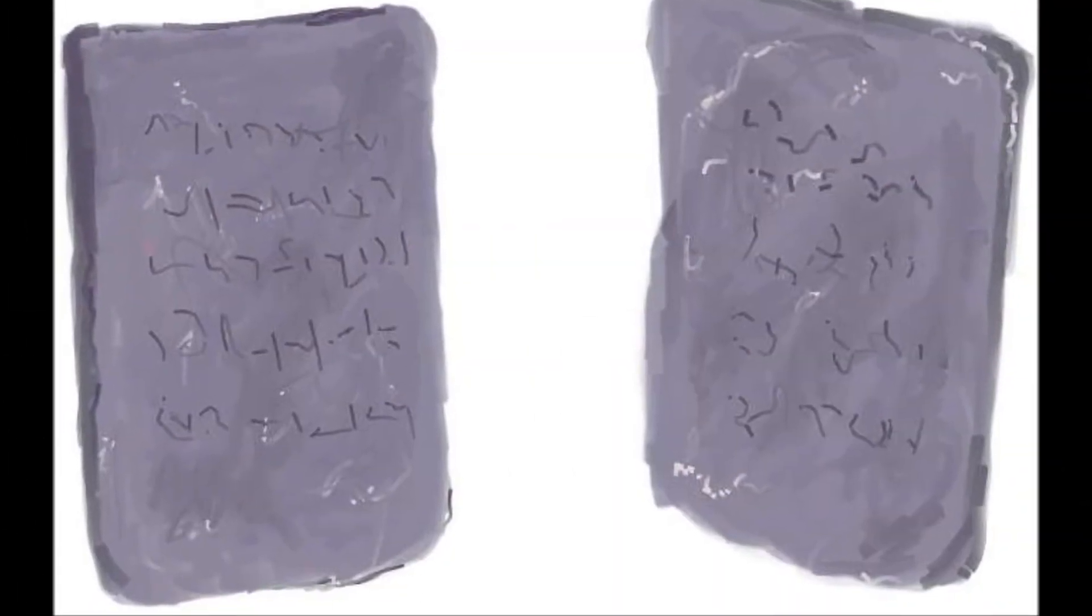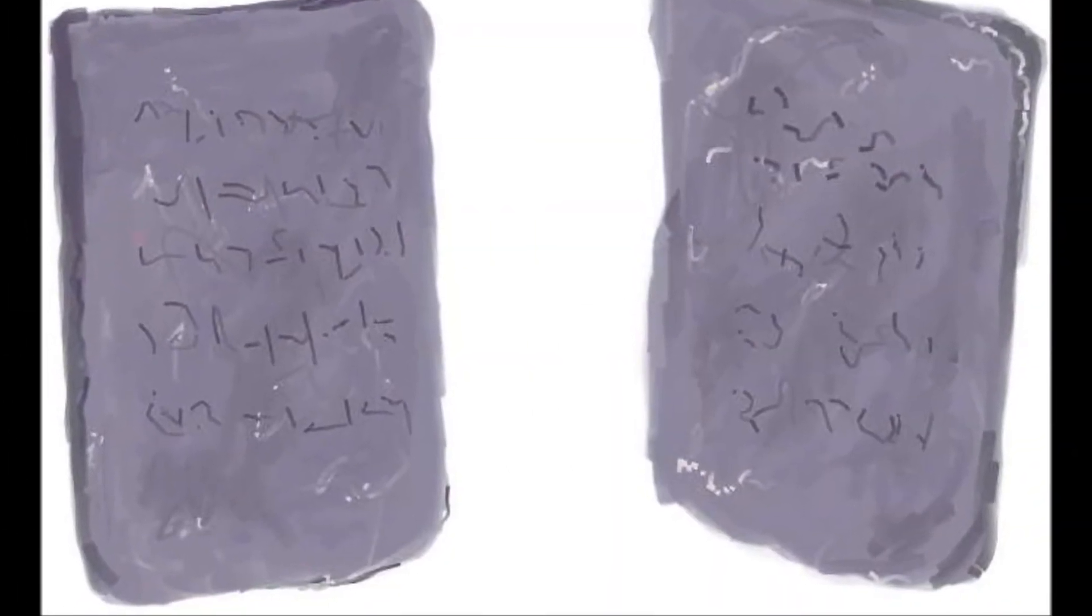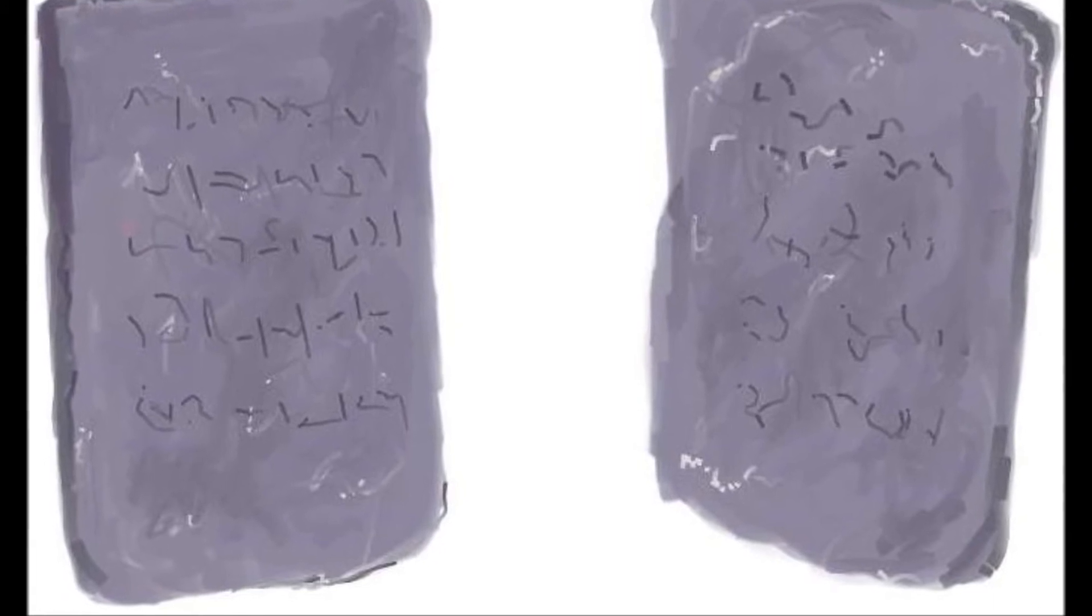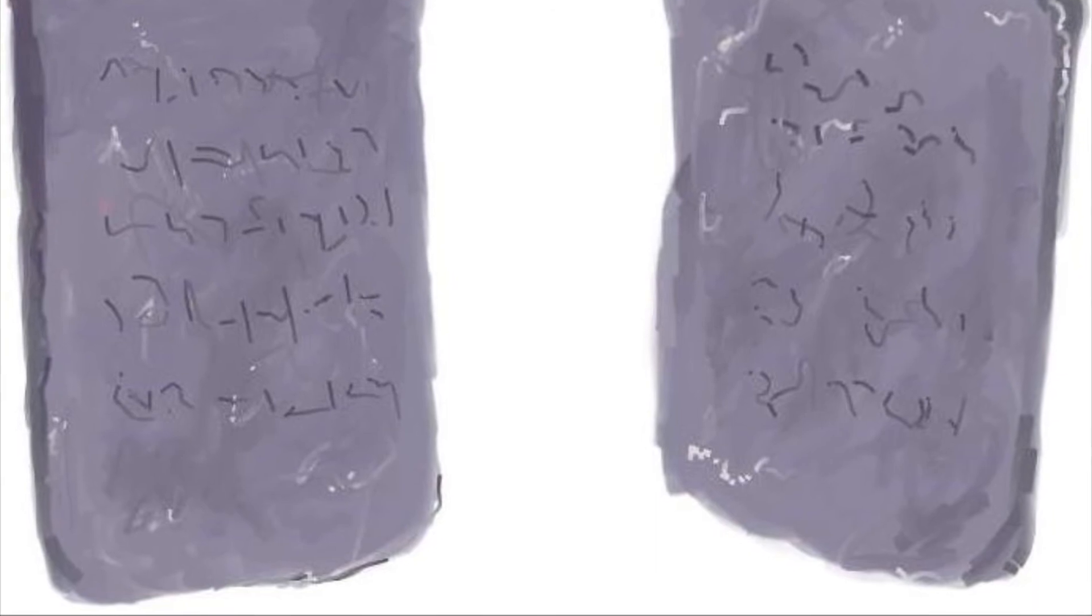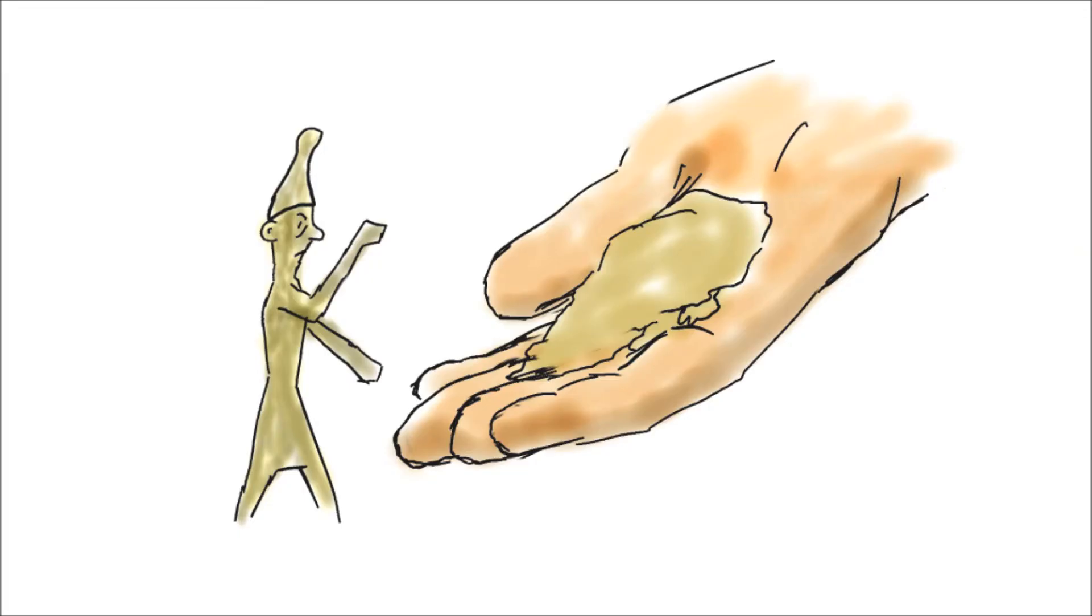From Israelite worship of a calf idol at Mount Sinai, which had led Yahweh to order Moses to kill many perpetrators, to the continuing worship of the Baals, Moloch, and other gods, which eventually would lead to the very predicament in which captive Israelites now found themselves in Babylon, it would be idolatry adopted from foreign sources that had caused all Israelite problems.